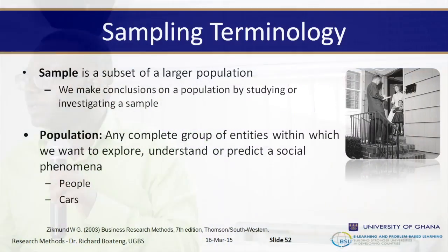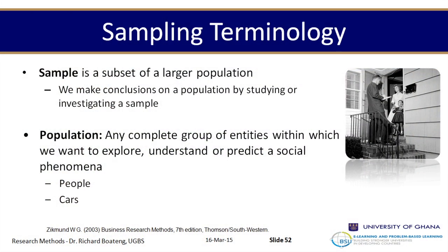A sample is a subset of a given population. We make conclusions on a population by studying the particular sample we select. A population is any complete group or set of entities we want to explore, understand, or predict. From our population we select a sample, study it, and make an inference on the population. To do that we usually have what we call the sampling frame.